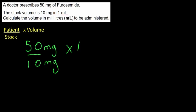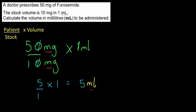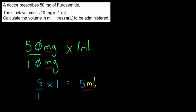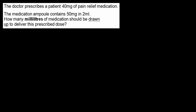The stock volume is one millilitre. I always check that the units are the same in the fraction — indeed they are, both milligrams. So I simplify: 50 and 10, divide both by 10, giving 5 over 1, times 1, which equals 5. My final answer is 5 millilitres. Checking with the calculator: 50 divided by 10 times 1 equals exactly 5 millilitres.